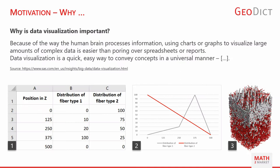First I would like to clarify why we consider visualization so important that we dedicate a whole workshop to this topic. Our brain processes visual information faster than it does text or numbers. We don't have to learn how to see pictures, but we do have to learn how to read. And even if the image does not communicate the core information, it can at least attract attention and make the interested person search the content for the desired information. A good visualization should make it easy for the viewer to acquire the desired information quickly and effortlessly. The viewer's expectation of the validity of the image in relation to the content plays an important role as well.